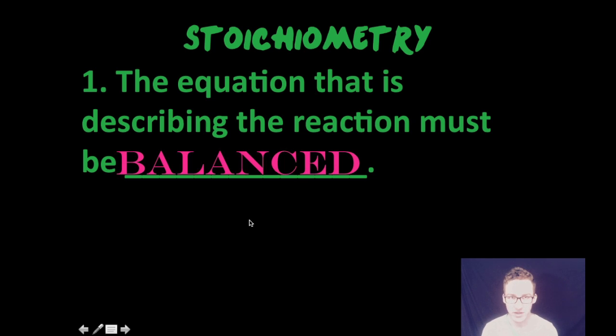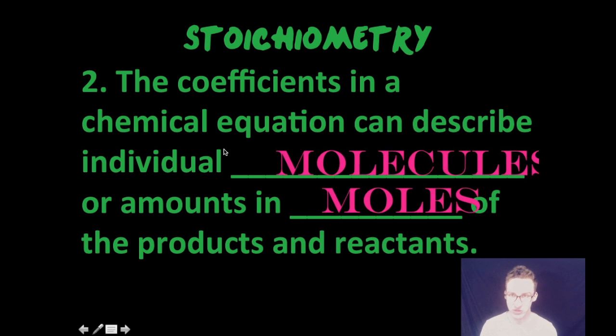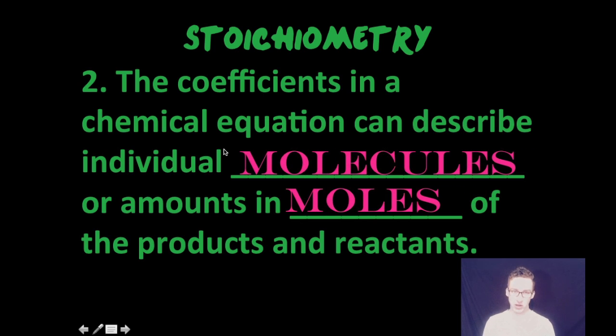One, your equation that you're working with has to be balanced. Conservation of mass. Two, the coefficients in your chemical equation can describe individual molecules, but more importantly and more practically, they will describe amounts in moles of both your products and your reactants.